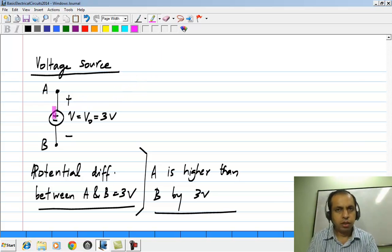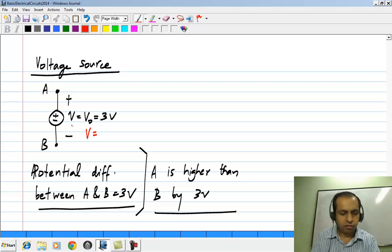Now, again I want to emphasize that the polarity shown here is for the definition of the voltage. The voltage itself could be positive or negative. So, let me take another case where V defined this way is minus 2 volts.